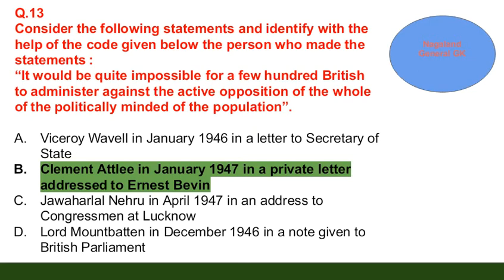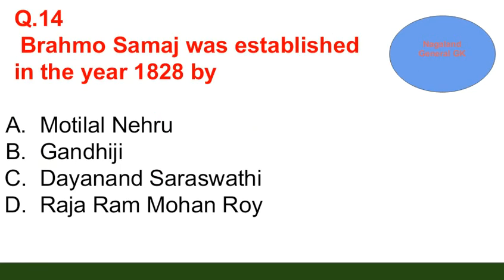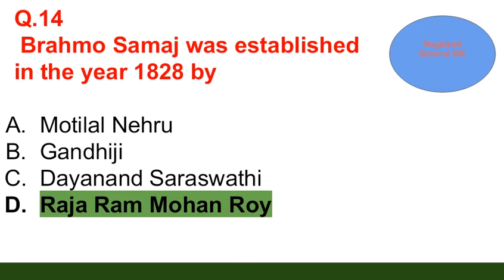Question number 14: Brahmo Samaj was established in the year 1828 by — option A: Motilal Nehru; option B: Gandhiji; option C: Dayananda Saraswati; option D: Raja Ram Mohan Roy. The correct answer is option D — Raja Ram Mohan Roy.